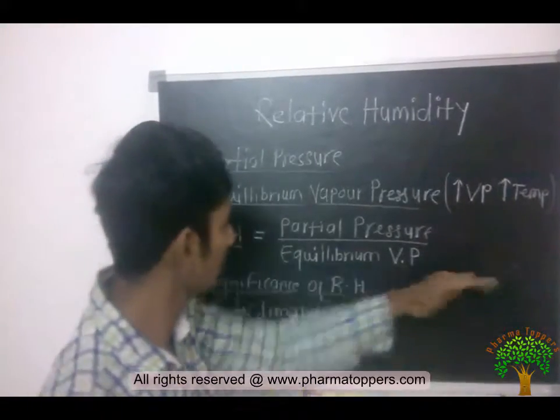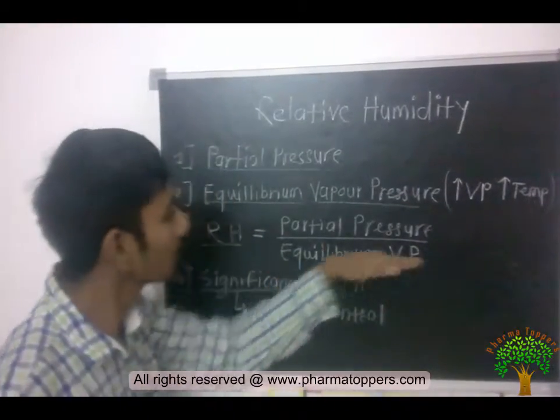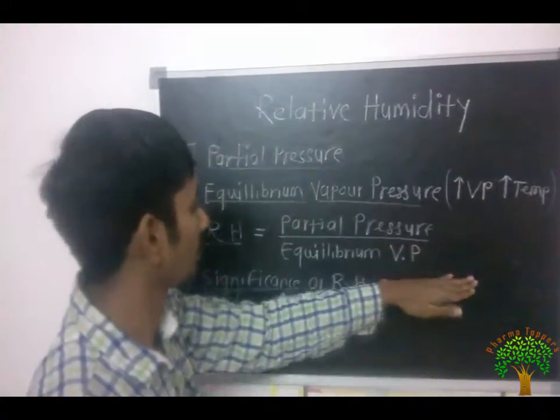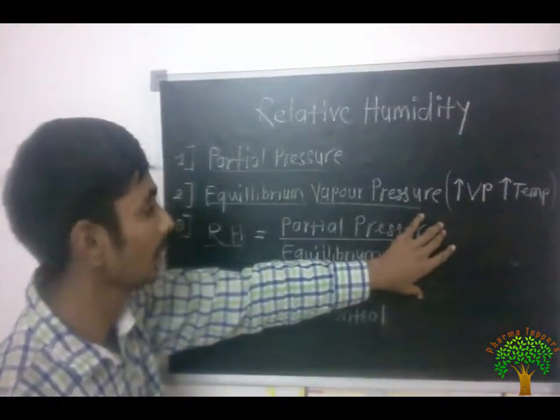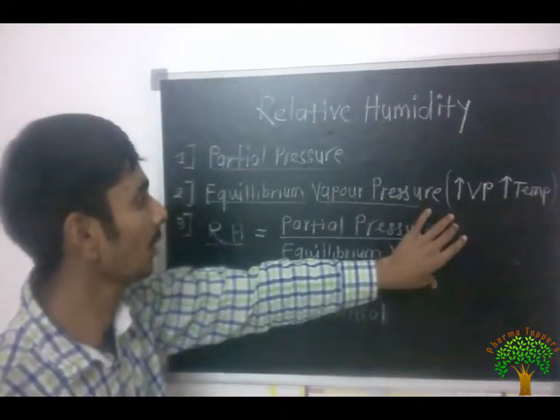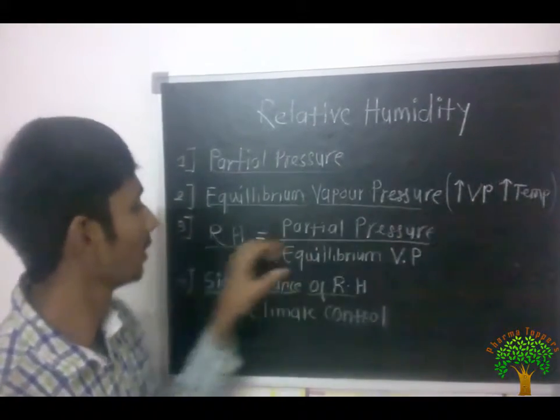Relative humidity is nothing but the ratio of partial pressure to the equilibrium vapor pressure. This is the net formula for relative humidity, and it is also the definition.